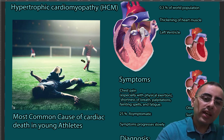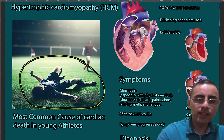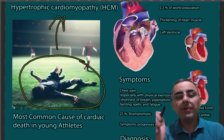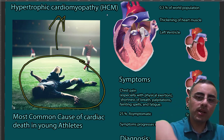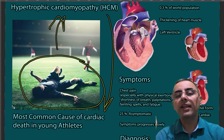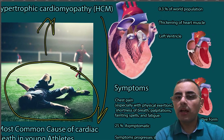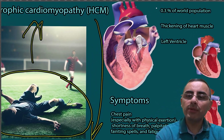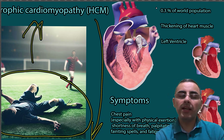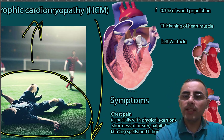If you've heard about a young athlete dying on the field suddenly, it's usually hypertrophic cardiomyopathy. Hypertrophic cardiomyopathy is the most common cause of cardiac death in young athletes. It affects around 0.3 percent of the world population.